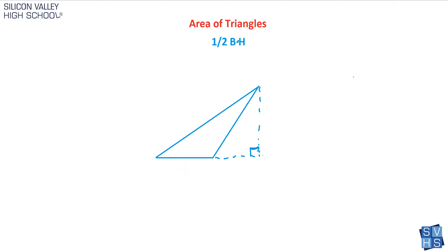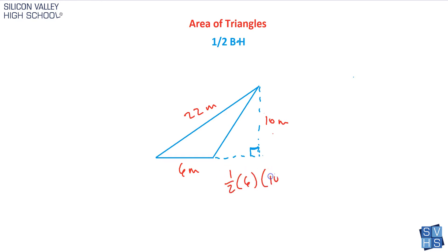Let's start with this problem. They'll give us something like this: the base is 6 meters and the height is 10 meters. Sometimes they'll give you a miscellaneous number just to distract you — say, 22 — and that is 100% a total decoy. It is not the base and it is not the height. So the area is 1 half times base 6 times height 10, which is 30 meters squared. Don't forget that for any area, your units are squared because you have meters times meters.